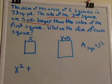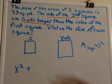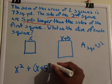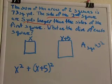And then we need to sum it. And then the area of the second square is what? x plus five squared. Okay, and what does all that equal? 73.